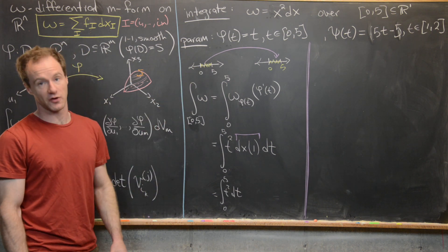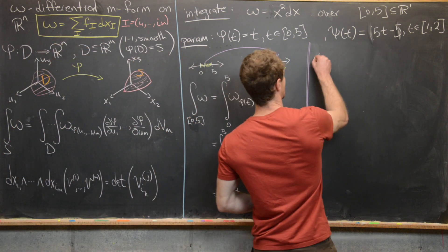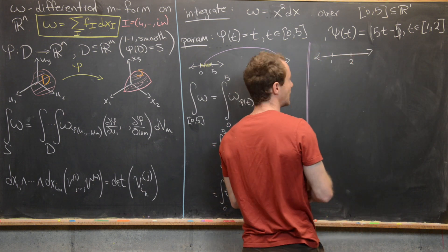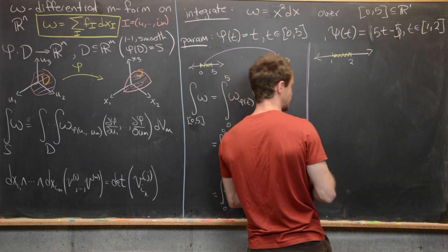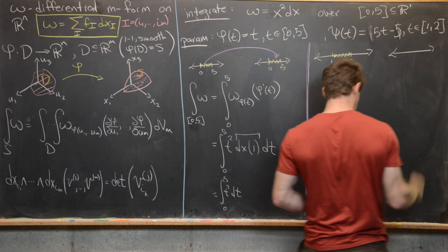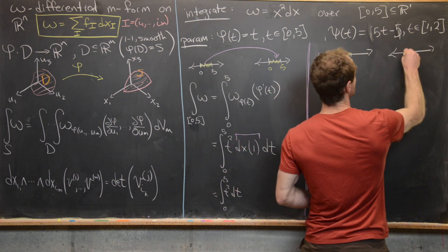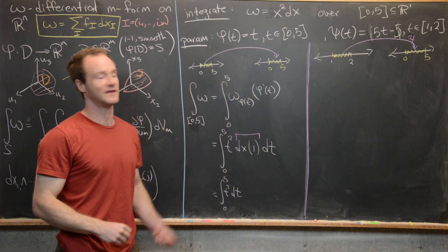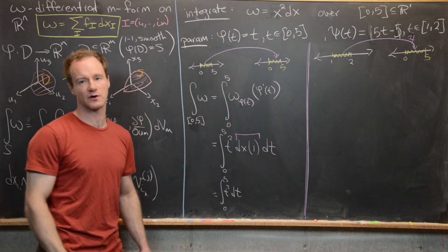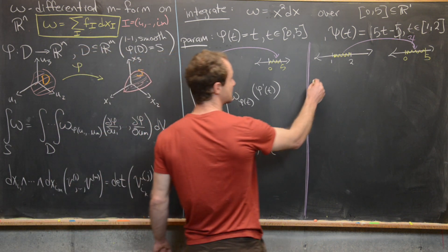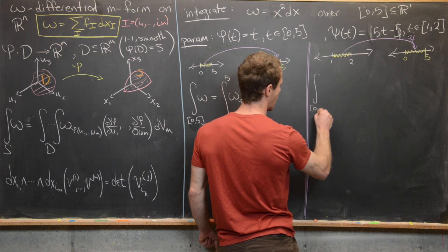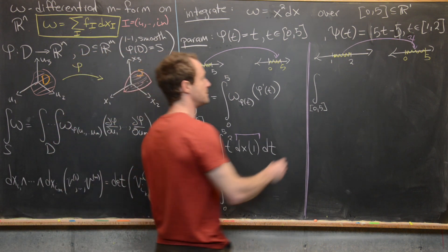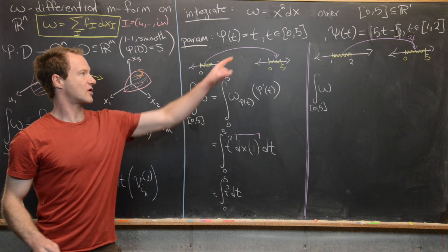Now let's do it with a second parametrization psi. Here the domain is the interval [1, 2], and our parametrization psi maps [1, 2] onto [0, 5]. We'll use this to evaluate the integral of the differential 1-form over [0, 5]. So again, we're integrating the same 1-form omega over [0, 5], but now using parametrization psi.